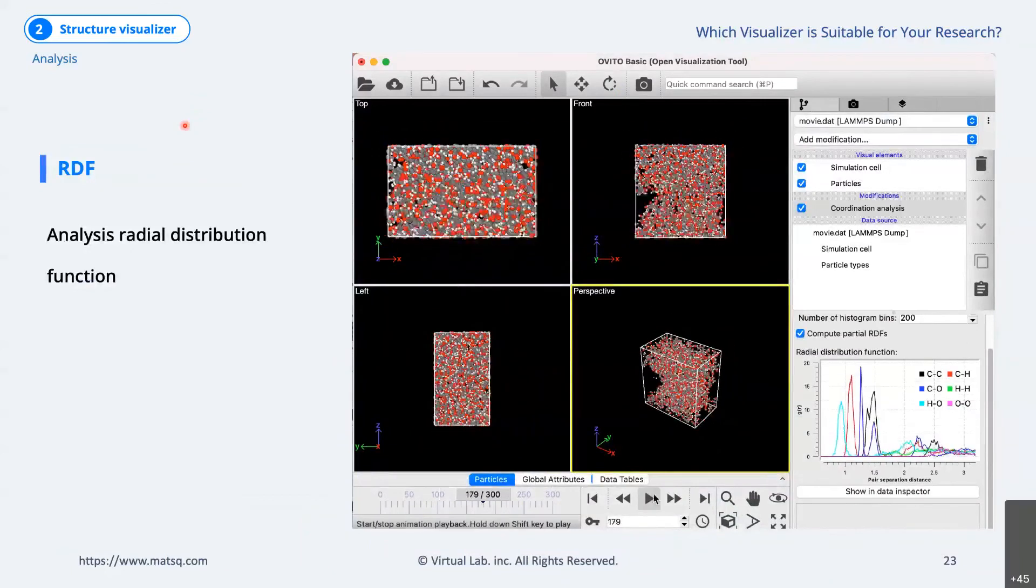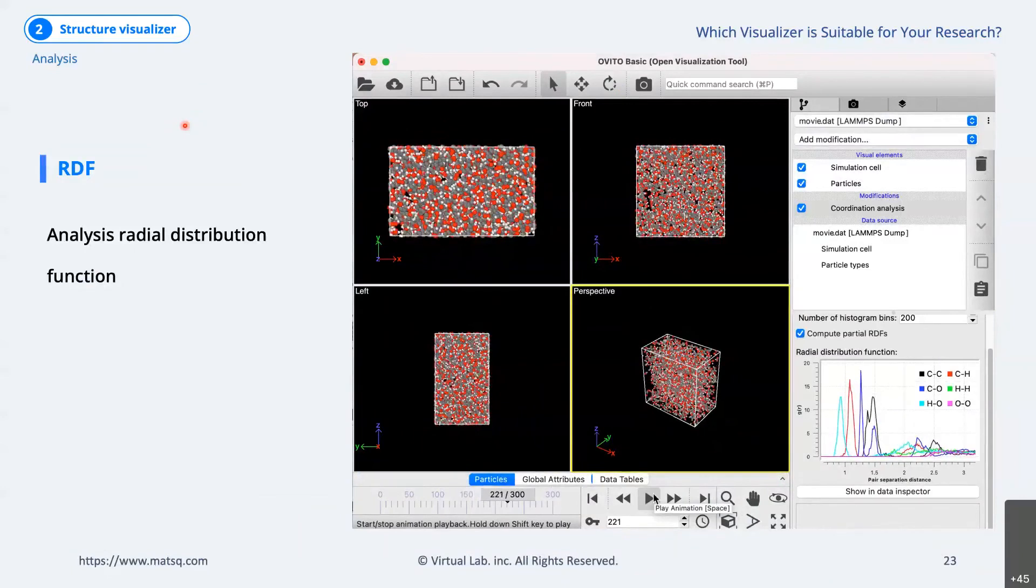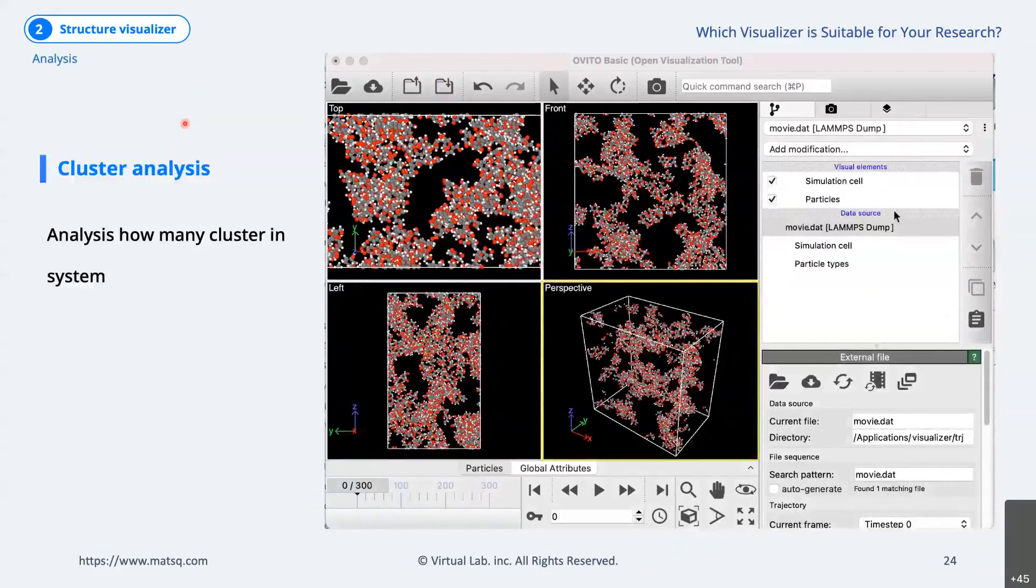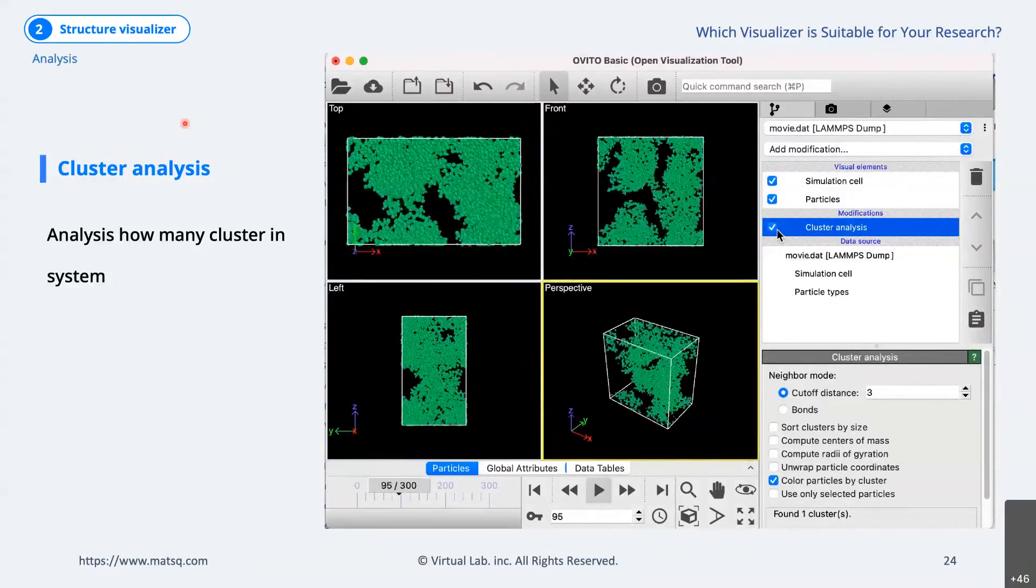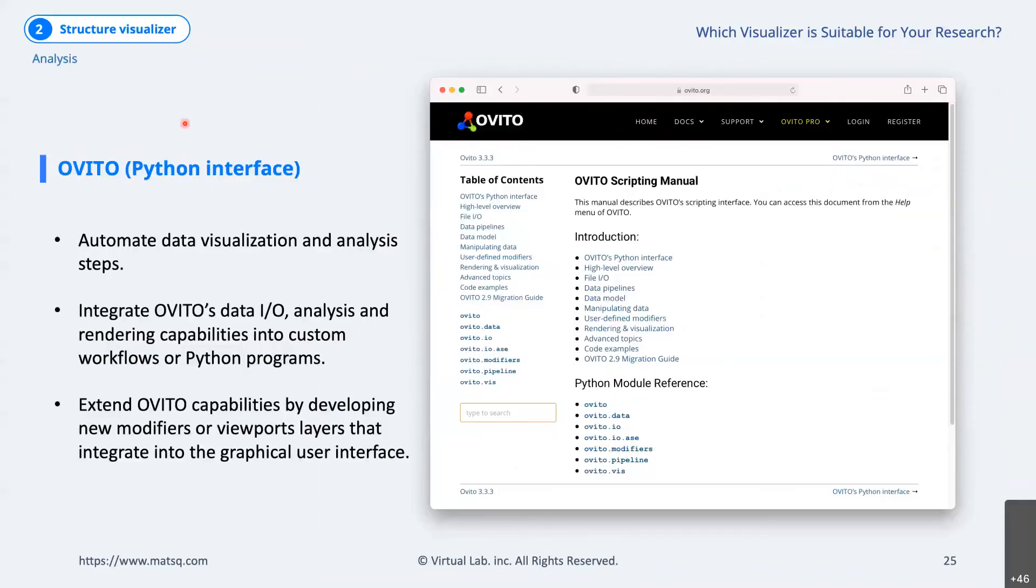Also, in OVITO, through cluster analysis, you can easily check what type of cluster structure has. There are three important features of OVITO's Python interface: automated data import, visualizer, and analysis steps. Integrate OVITO's Data I/O, analysis and rendering capabilities into custom workflow or Python programs. Extend OVITO capabilities by developing new modifier or viewport layers that integrate into the graphical user interface.